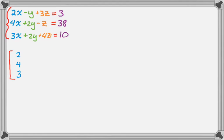So first thing I'm going to do is turn this into a matrix. So I've got an x column with 2, 4, and 3. I have a y column with negative 1, 2, and 2. And then a z column with 3, negative 1, 4. So I'm pulling coefficients. And then I have a constant column, so these are the things that equal 3, 38, and 10.